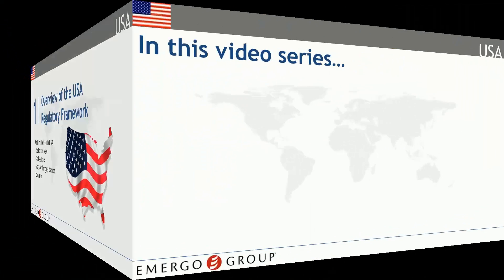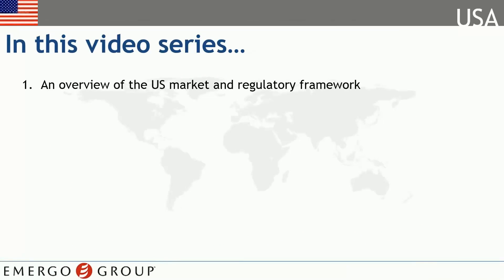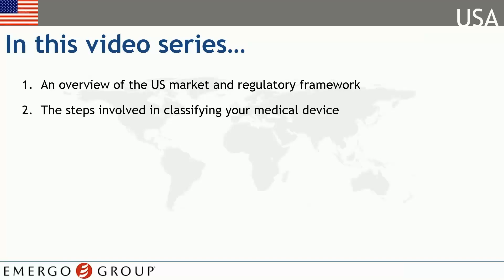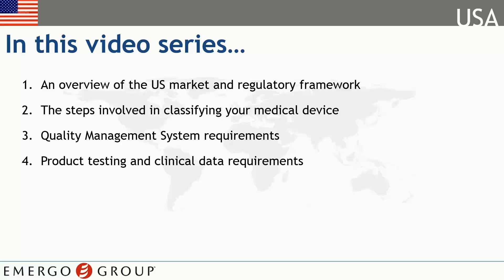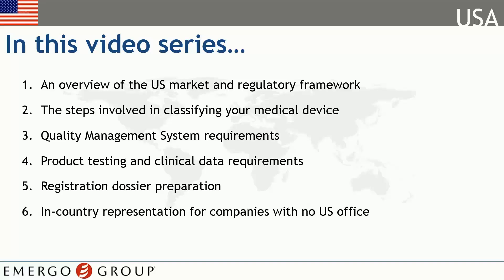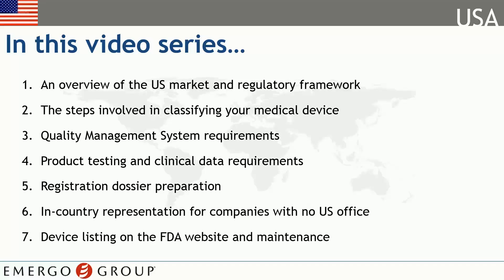This course is broken up into seven sections or modules. First, we'll take a brief look at an overview of the United States market and regulatory framework. Next, we'll examine the steps involved in classifying your medical device. Then, we'll cover U.S. quality management system requirements, followed by an overview of product testing and clinical data requirements. We'll also discuss dossier preparation before moving on to how in-country representation works. And finally, we'll end with a section about device listing and maintenance. You can use the thumbnails to skip around between topics if desired, or just let them run in sequence.